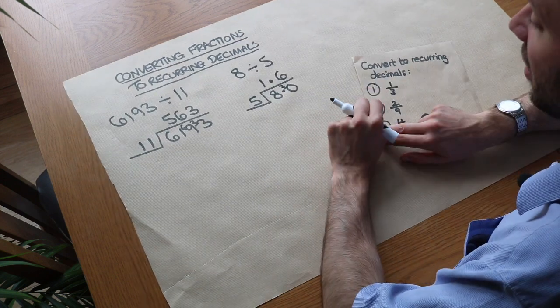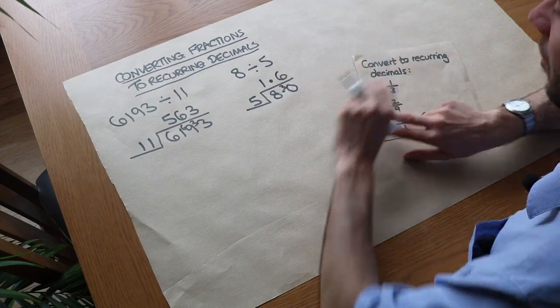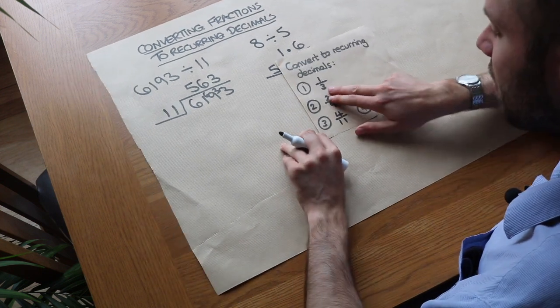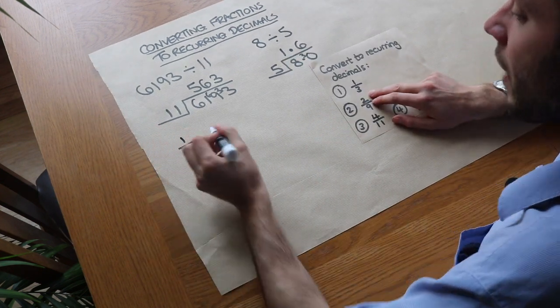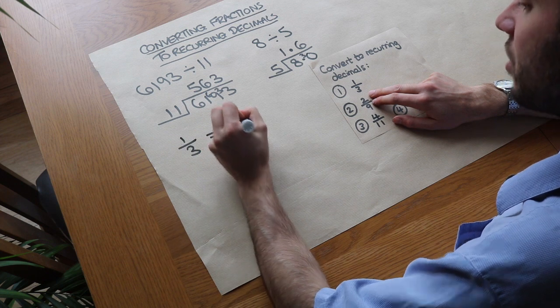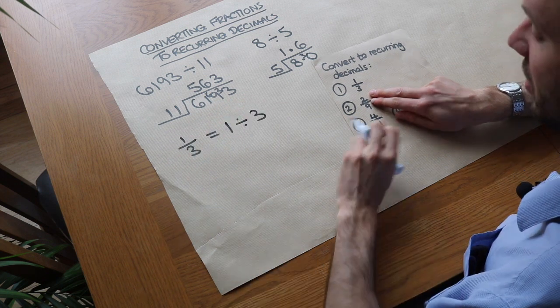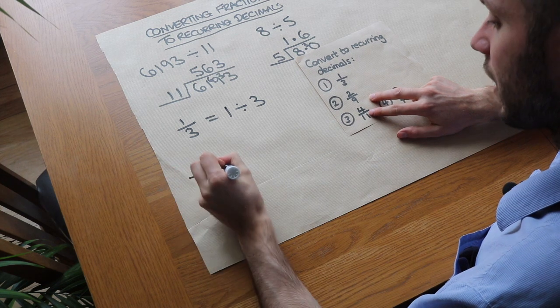But we can use this principle to get infinitely many digits after the decimal place. So let's just say we had a third. That means 1 divided by 3. Just remember that a fraction is ultimately just a division.